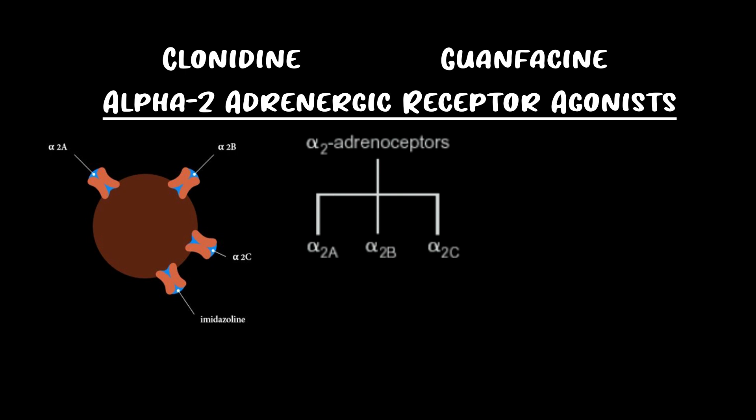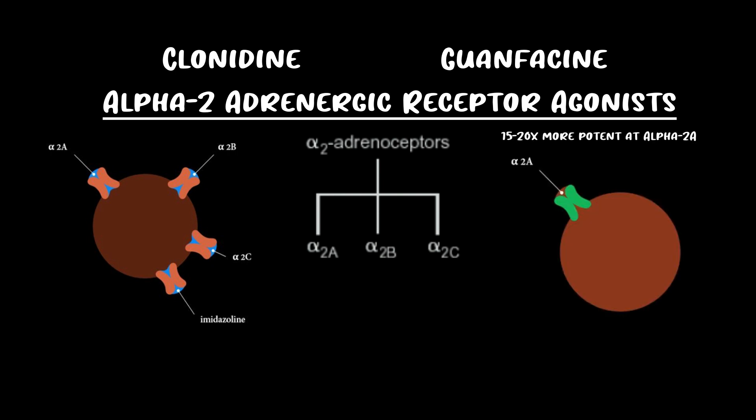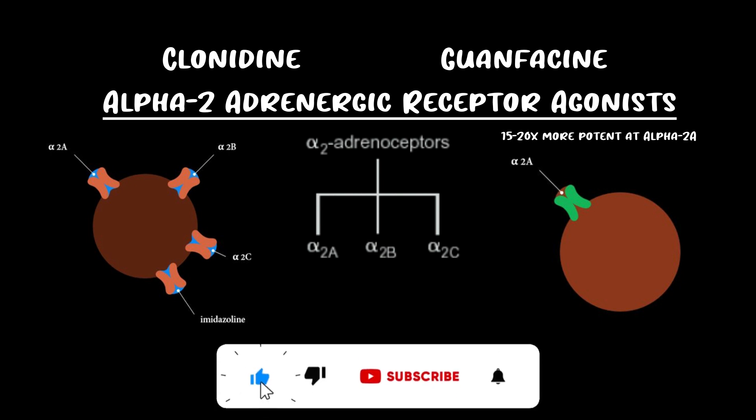Guanfacine is 15 to 20 times more selective for alpha-2a adrenergic receptors than the other subtypes. This probably helps explain why there's an increased therapeutic efficacy with guanfacine and a reduced side effect profile. Head-to-head studies have never shown that definitively, but that's probably the case.